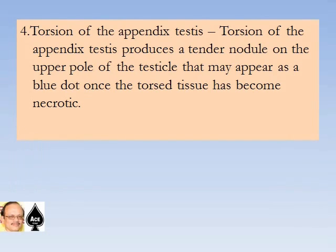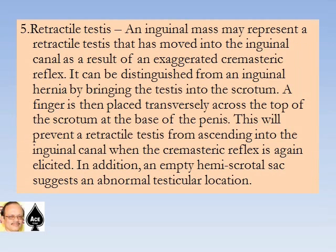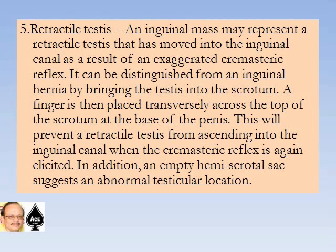Torsion of the appendix testis produces a tender nodule on the upper pole of the testicle that may appear as a blue dot once the torsed tissue has become necrotic. Retracted testis: an inguinal mass may represent a retracted testis that has moved into the inguinal canal due to an exaggerated cremasteric reflex. It can be distinguished from an inguinal hernia by bringing the testis into the scrotum; a finger placed transversely across the top of the scrotum at the base of the penis prevents ascent when the cremasteric reflex is elicited. An empty hemiscrotal sac suggests abnormal testicular location.